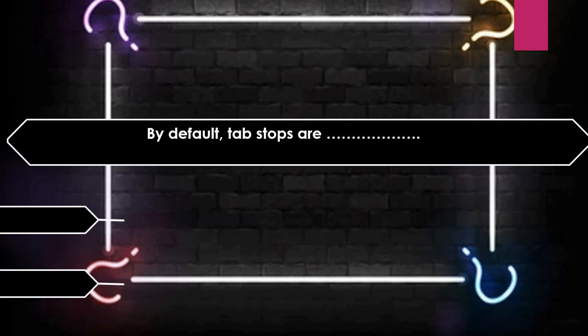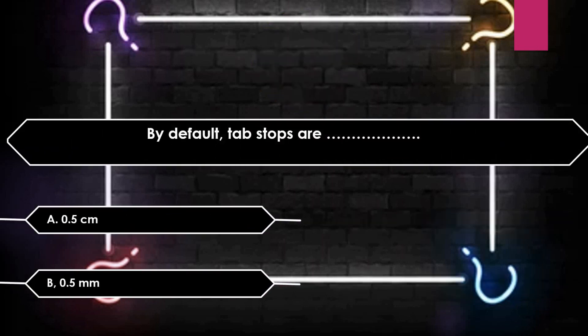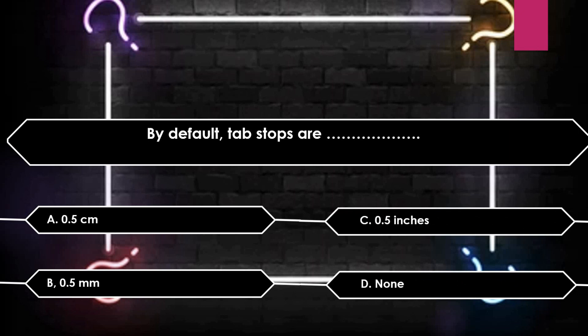By default, tab stops are: 0.5 cm, 0.5 mm, 0.5 inches, or None. The default tab stops are 0.5 inches.